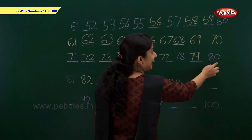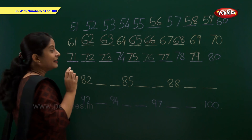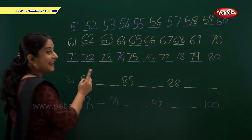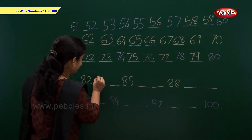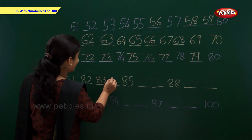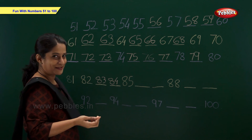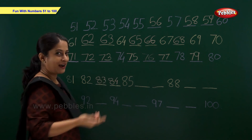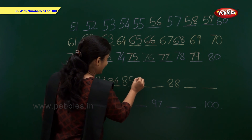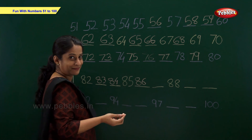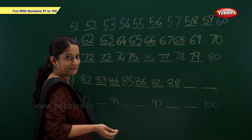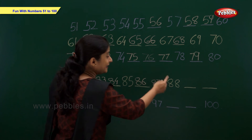79, 80. Which number comes after 80? 81, 82, 83, 84, 85. And now, 86, 87, 88.